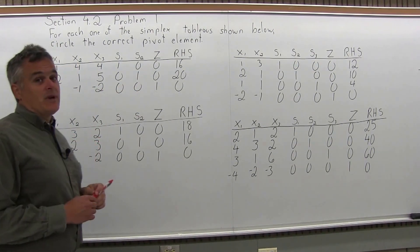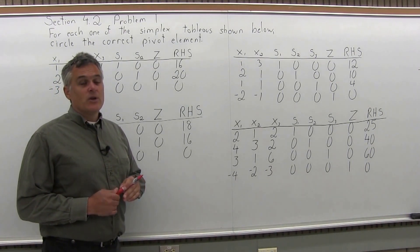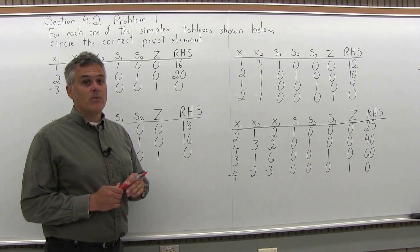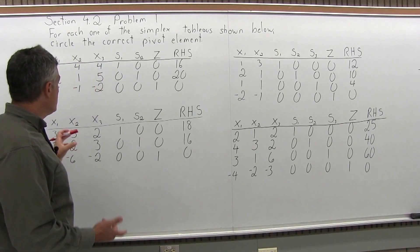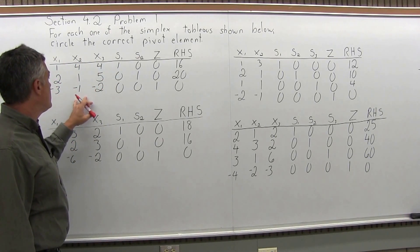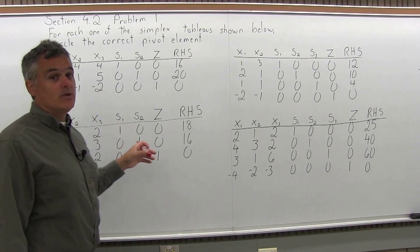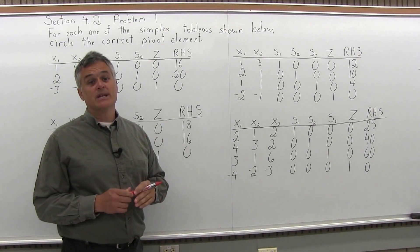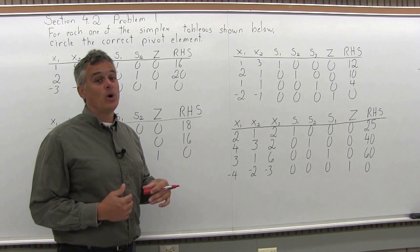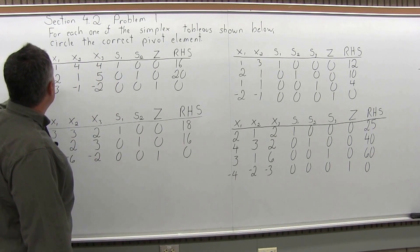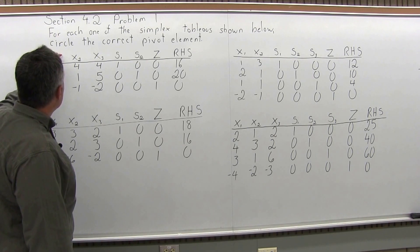To find the correct pivot element, first you want to find the correct pivot column by finding the most negative item in the bottom row. As I look in the bottom row, I have three negative values: negative 3, negative 1, and negative 2. Negative 3 is the most negative. It occurs in the X1 column, the far left column. So the pivot element must be somewhere in the X1 column.